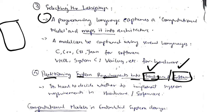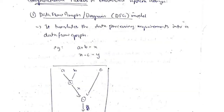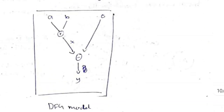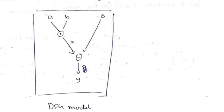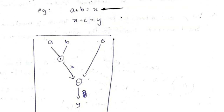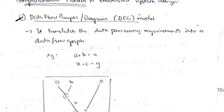There are several computational models for representing processes. The first is the data flow graph (DFG). For example, if you have to perform a+b=x and x-c=y, you represent it as a graph: inputs a and b feed into a plus node to get x, then x and c feed into a minus node to get y. This graphical representation of equations is known as the data flow graph model.